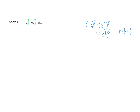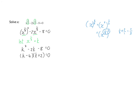So I'm going to start off by rewriting the first term as x to the power of a third, to the power of 2, minus 2x to the power of a third, minus 8 equals 0. Now you'll realize that x to the power of a third appears more than once, so I'm going to let x to the power of a third equal k. Substituting gives k squared minus 2k minus 8, and now I'm going to factorize. This means that k is either 4 or k is negative 2.